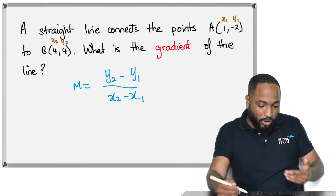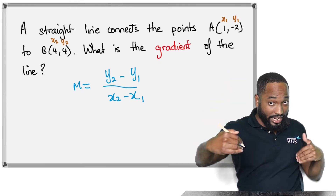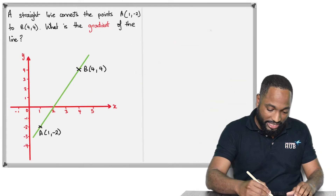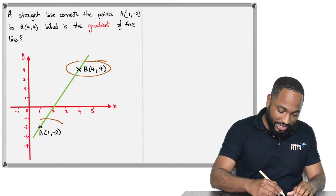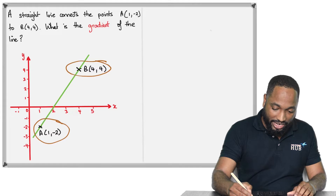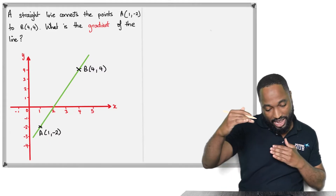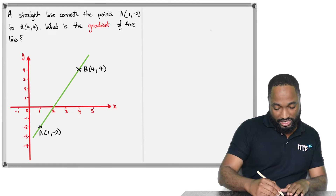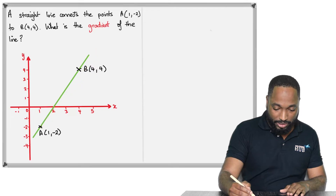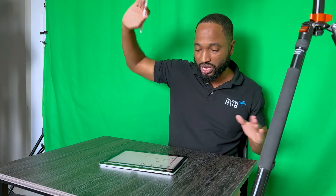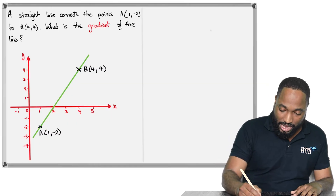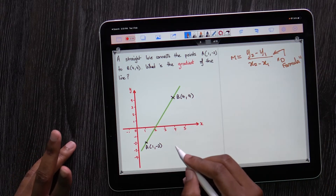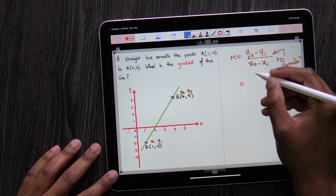If you think about it, these are two points on the line. This is B and this is A — these are two points on the line and we want the gradient of the line. You can see the gradient is going to be a positive number because it's going up a hill. So if I just apply the formula: x1, y1, x2, y2.